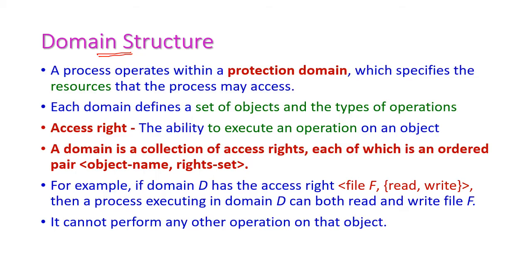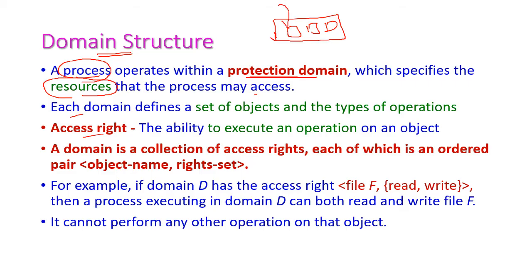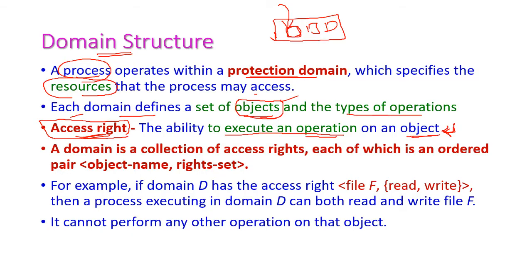Next, let us see the domain structure. A domain contains processes, objects, and access rights. A process operates within the protection domain, which specifies the resources the process may access. Within a domain we have many resources, and the process should execute only inside the domain with the given resources. The domain defines the objects and the type of operations associated with these objects. Access rights refer to the ability to execute an operation on an object.